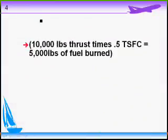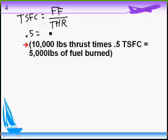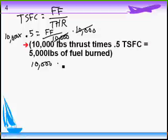Here's another example. If TSFC equals pounds per hour of fuel flow over pounds of thrust, and we have a TSFC of 0.5 with 10,000 pounds of thrust, we can solve for fuel flow by multiplying each side by 10,000. The 10,000s cancel out, giving us 10,000 times 0.5 equals fuel flow, so fuel flow equals 5,000 pounds per hour.